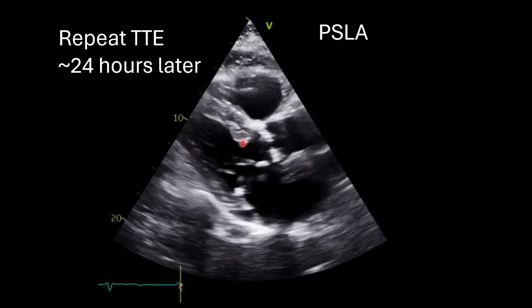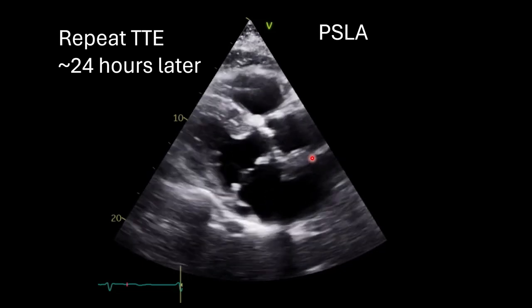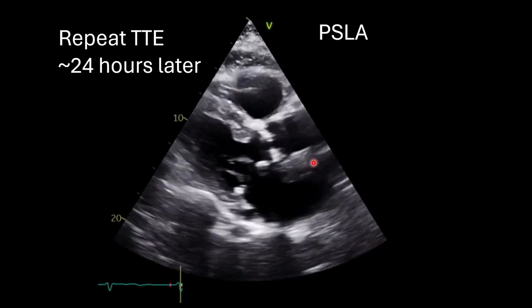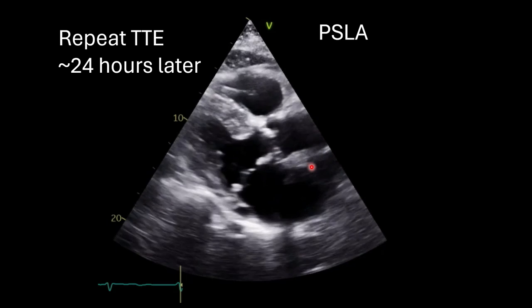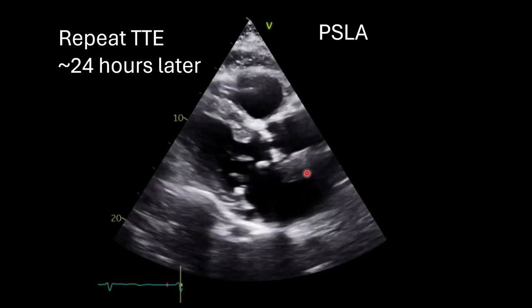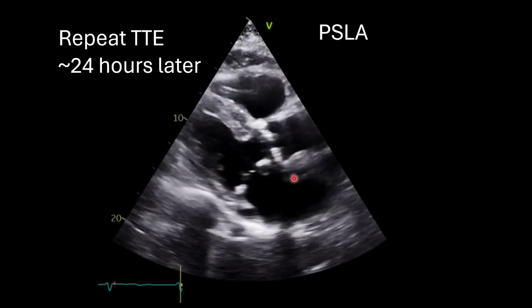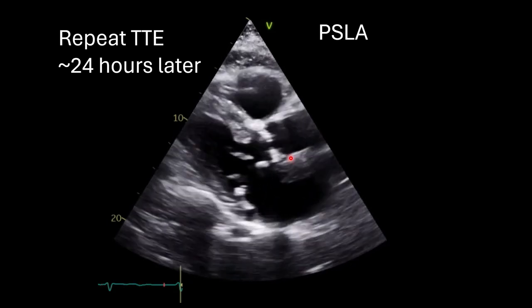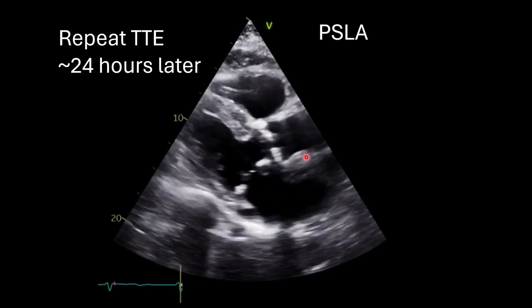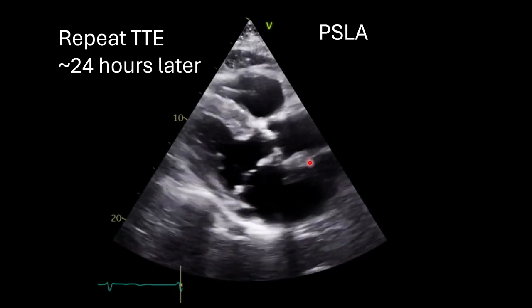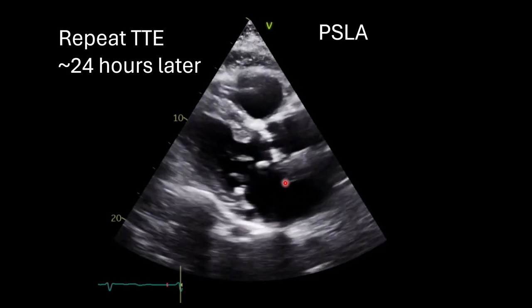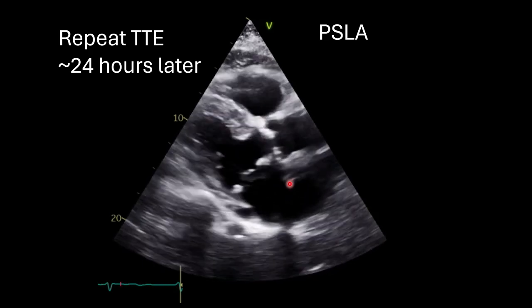After about 24 hours, there's a repeat echocardiogram. On this parasternal long axis view, there's now an echogenic mass that appears to be piercing the interatrial septum and is now in the left atrium.